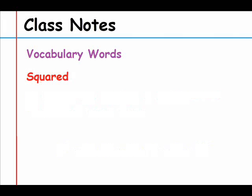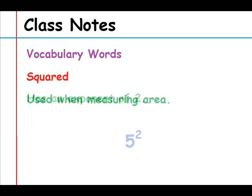The next vocabulary word is squared. Squared means the number has an exponent of 2. For example, 5 squared means 5 with an exponent of 2. Squared is also used when measuring area.